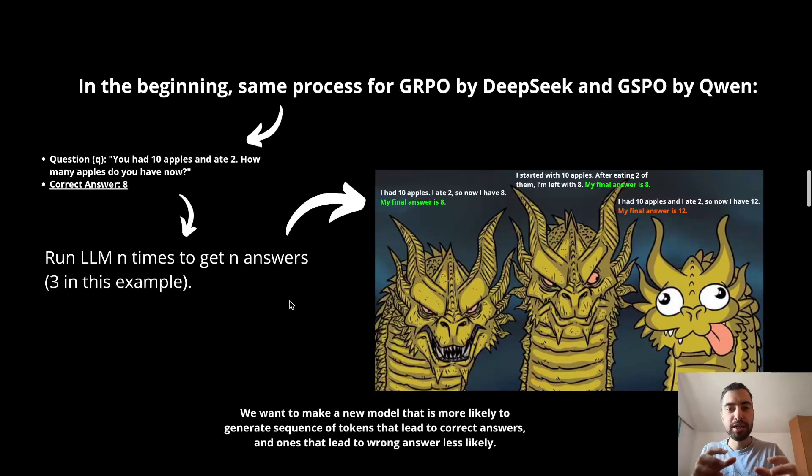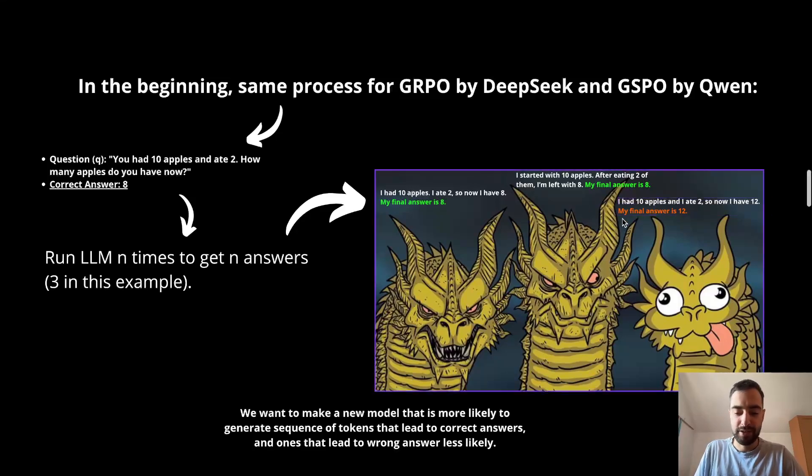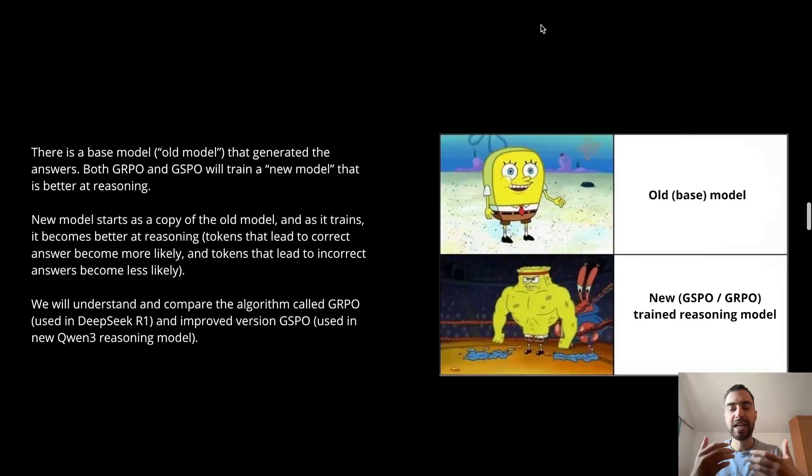Now we want to just copy this base model and in this copy we want to train that copy to become more likely to write these correct answers and less likely to write these wrong answers. In the beginning we have this base model that generated these answers and then we will copy that and then we will train the copy to become better at reasoning using GRPO and GSPO. So both algorithms do the same thing in the beginning and I will tell you when they start to diverge later.